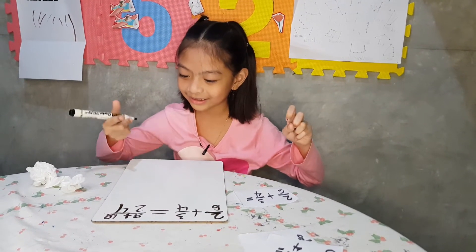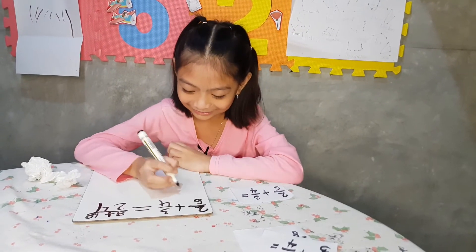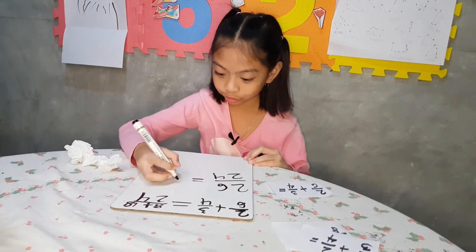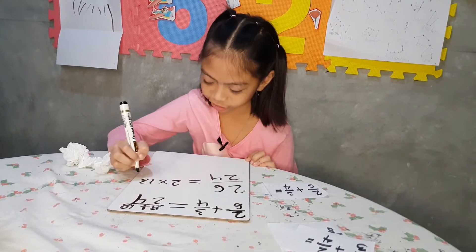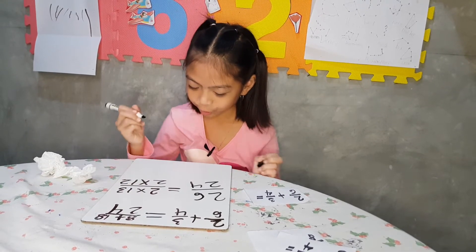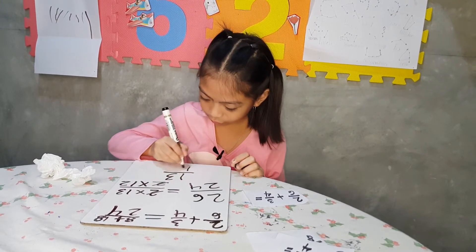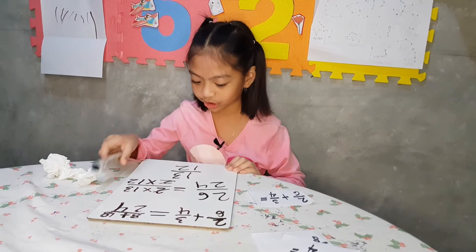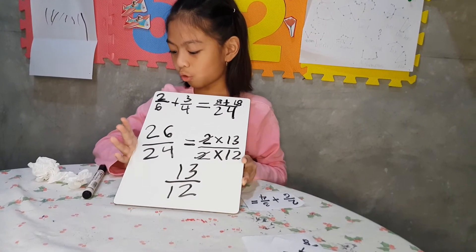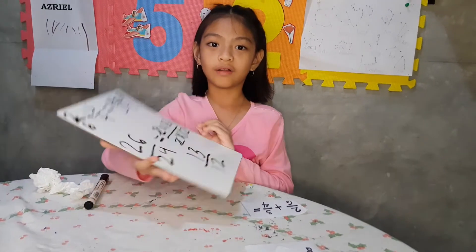8 plus 18 equals 26. Cancel to get the answer 13 over 12. So the answer of 2 over 6 plus 3 over 4 equals 13 over 12.